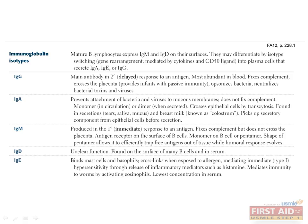There are five different immunoglobulin isotypes: IgG, IgA, IgM, IgD, and IgE. Understanding their different functions is quite high yield. All mature B cells express both IgM and IgD. When these cells further differentiate into plasma cells, they are capable of secreting IgA, IgE, and IgG. IgG is the most abundant isotype and is capable of crossing the placenta, thus providing infants with passive immunity. IgA exists in either a monomer or a dimer and is importantly found in secretions. IgM is involved in the immediate response to an antigen and exists as either a monomer or a pentamer. IgE binds mast cells and basophils, mediating hypersensitivity through cross-linking upon exposure to allergens, and also mediates immunity to helminths and activates eosinophils.